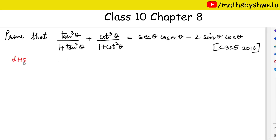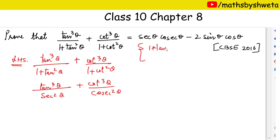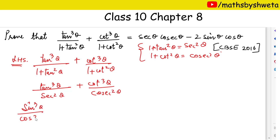Let's work on the left hand side. So I have tan³θ upon 1 plus tan²θ. Now I have written 1 plus tan²θ. We can take tan as sin upon cos, so substituting tan = sinθ/cosθ, and similarly for cot, and we get sin/cos terms in the numerator and denominator.